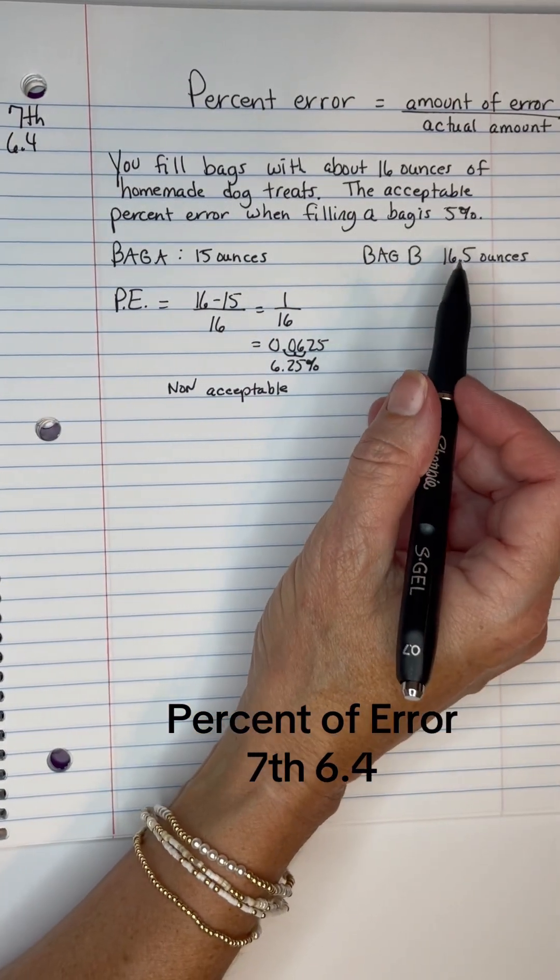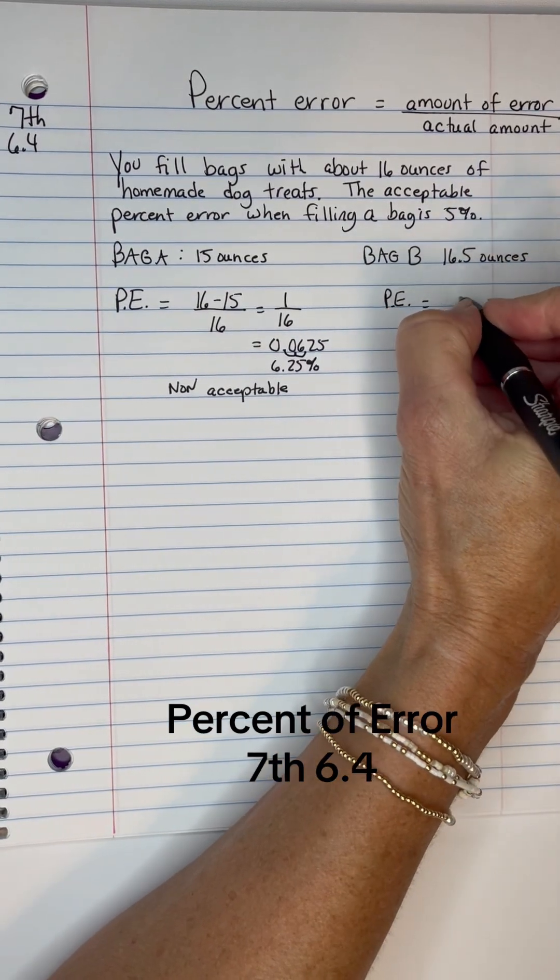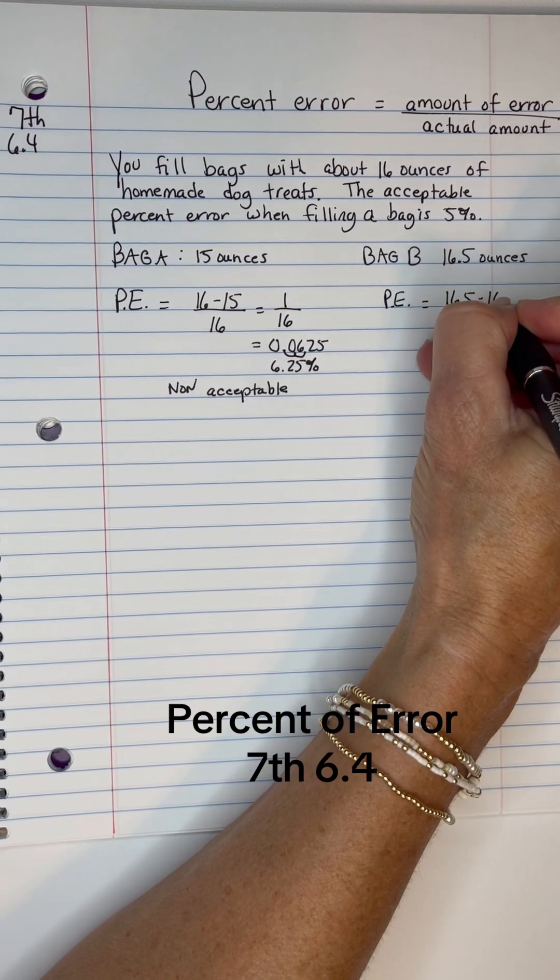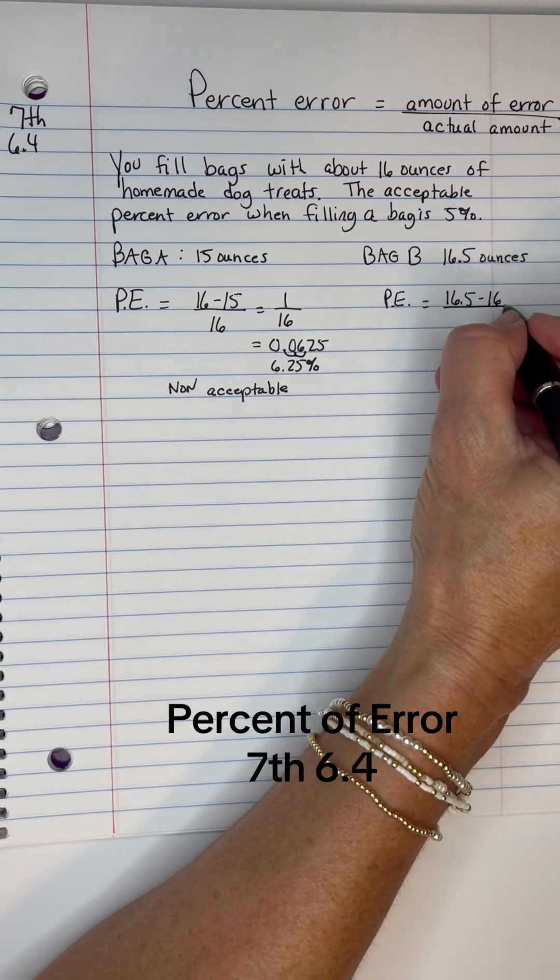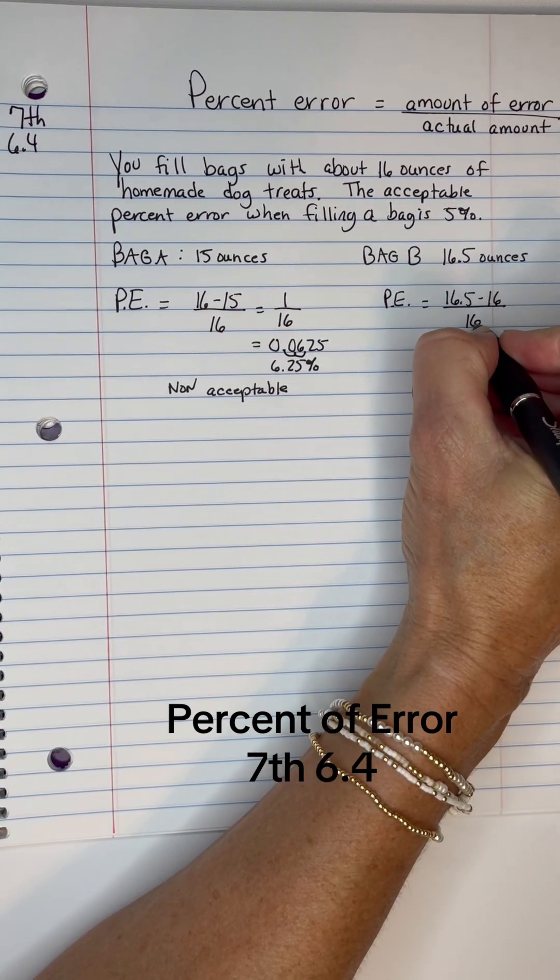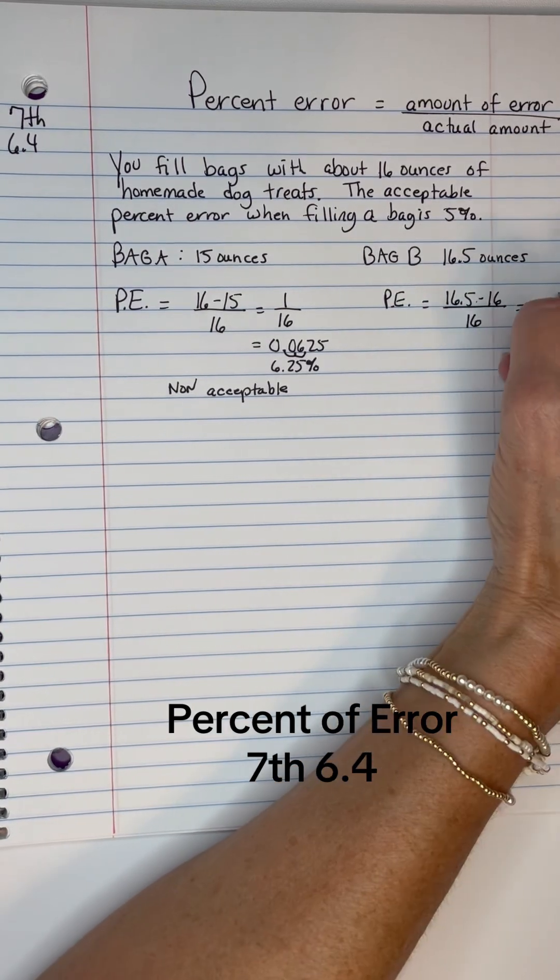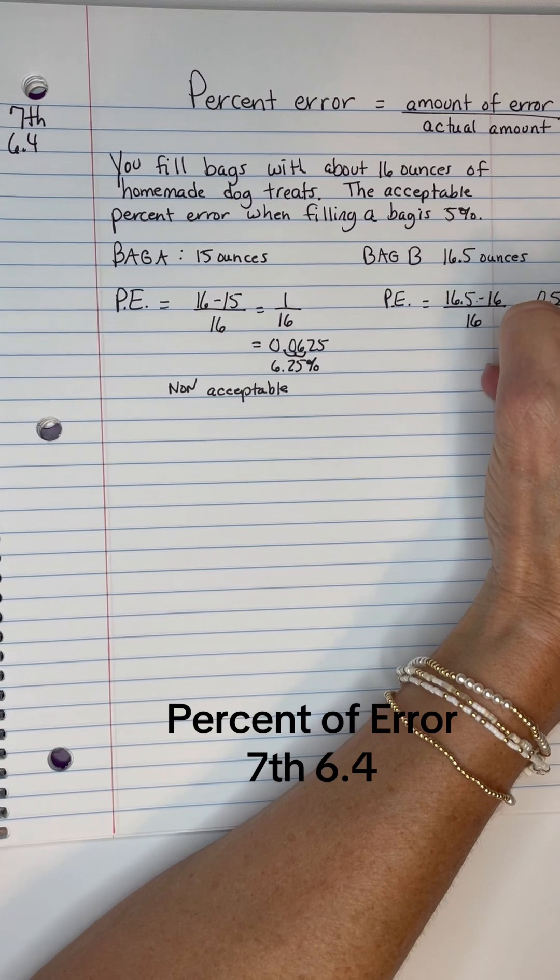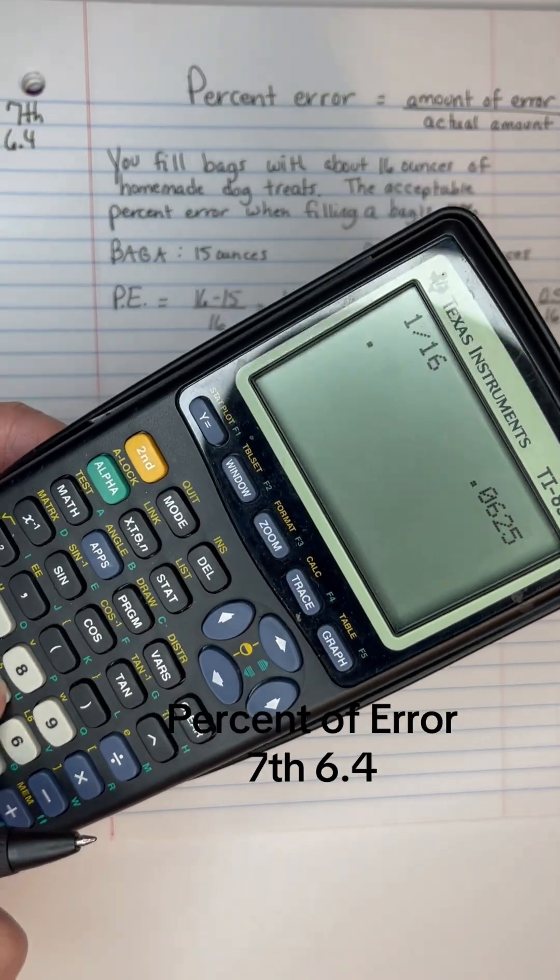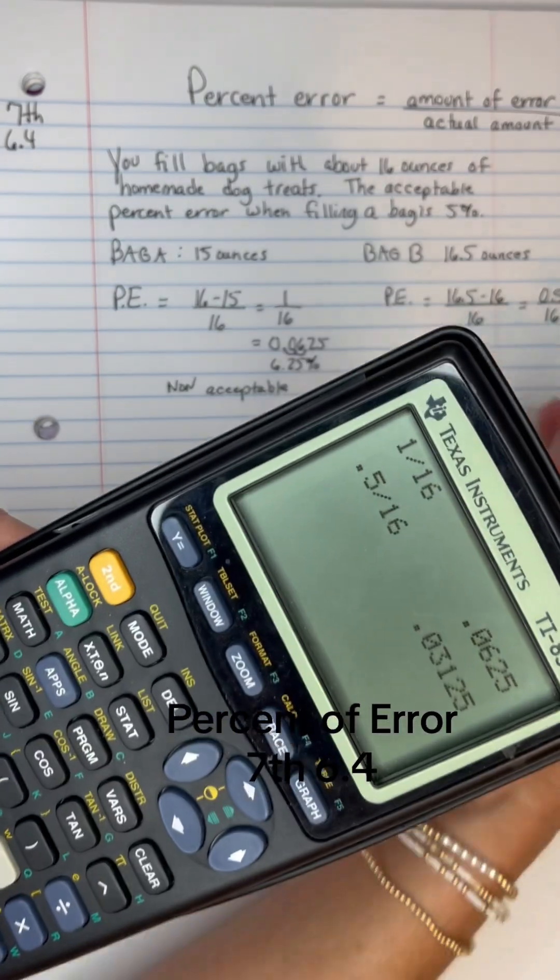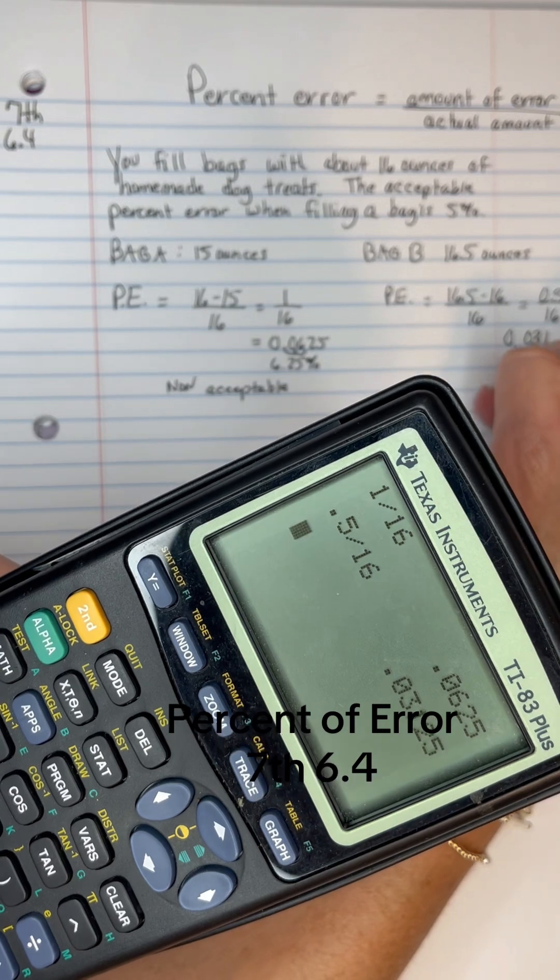Now bag B has 16 and a half ounces. So the percent error for this one would be 16.5 minus 16. This is how much they put in. This is how much they were supposed to put in. Divided by the original actual amount, which is 16. Well, 16.5 minus 16 leaves 0.5 divided by 16. So let's divide that, 0.5 divided by 16 is 0.03125.